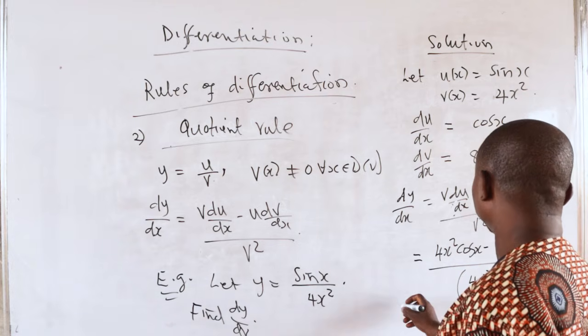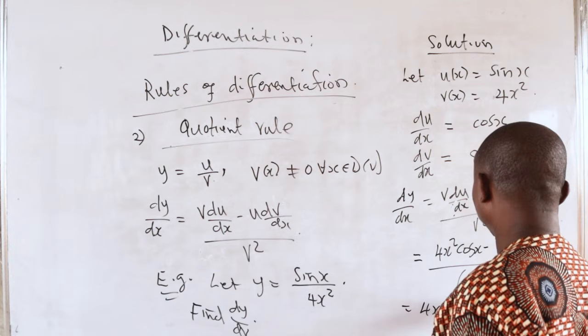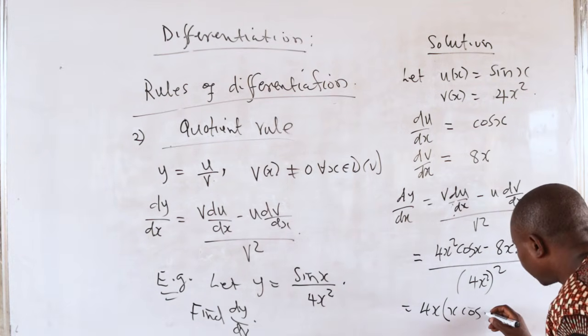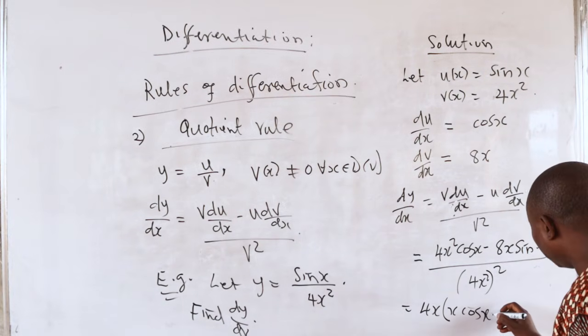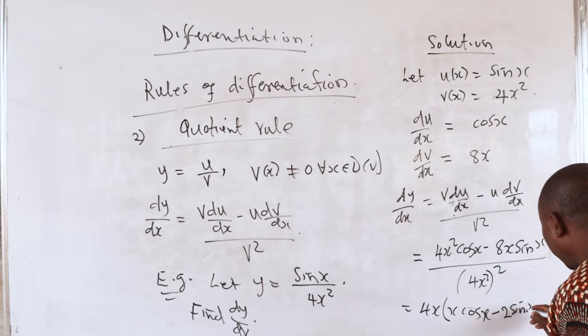This is 4x common here, so I have 4x into x cos x, x cos x minus 2 sin x,